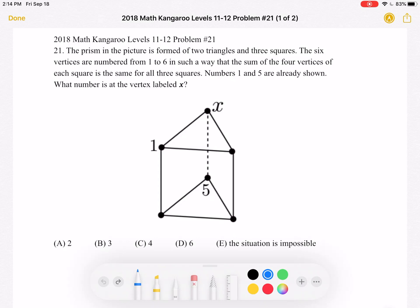The prism in the picture is formed of two triangles and three squares. The six vertices are numbered from 1 to 6 in such a way that the sum of the four vertices of each square is the same for all three squares. Numbers 1 and 5 are already shown. What number is at the vertex labeled x?